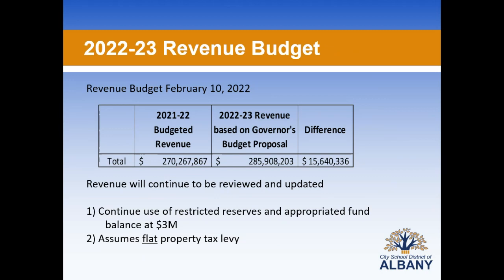At this time, we are estimating our revenue based on the Governor's proposed budget to be $285.9 million for next year, which is a year-over-year increase of $15.6 million. This continues to assume the use of restricted reserves and appropriated fund balance of $3 million and a flat property tax levy.